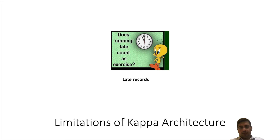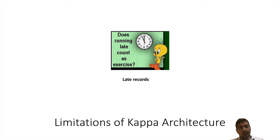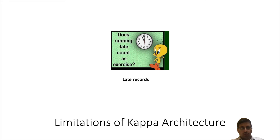Last but not least — late records. It often happens that there is an issue in your upstream, and in those situations you will get your records late. It is easier to handle this in a batch system, but it becomes very tedious in a real-time pipeline because the results have already been sent to the user. You have to reprocess those records and compare how different the earlier output was from what arrives when the late records come in. So handling of late records is an important aspect to consider.